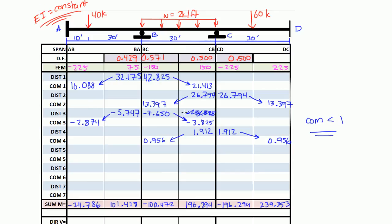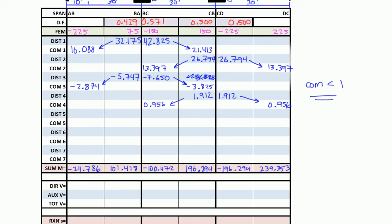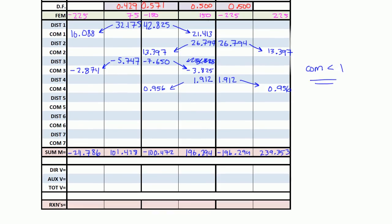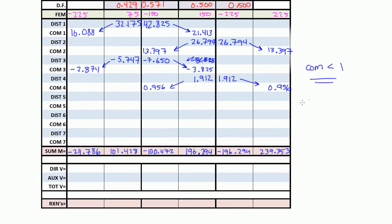Welcome back. In the last video we did several cycles of moment distribution and we've summed all the moments for each side of the joint. Our sum of moments is down here. Now we need to figure out what the direct shear, auxiliary shear, and total shear are.